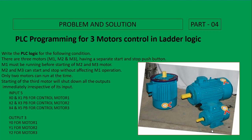Motor 1 must be running before starting Motor 2 and Motor 3. Motor 2 and Motor 3 can start and stop without affecting Motor 1 operation. Only two motors can run at a time — starting a third motor will shut down all outputs immediately, irrespective of its input.